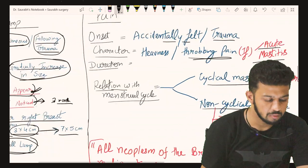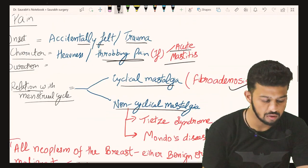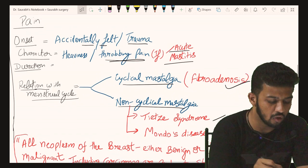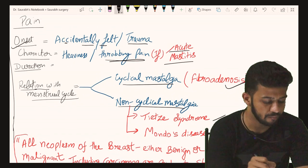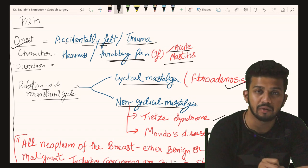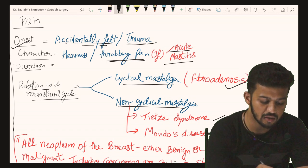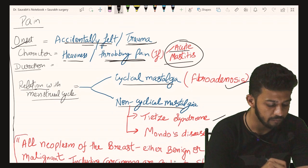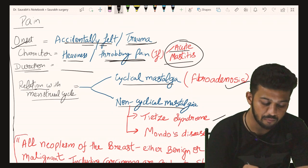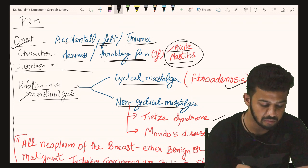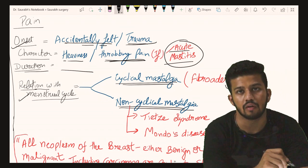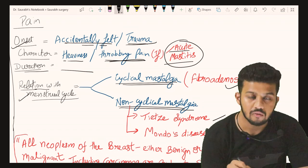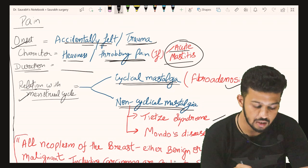Regarding pain: the onset is accidentally felt or following trauma. The character can be heaviness or lumpiness in the breast; if there is throbbing pain it can be acute mastitis. The relation with the menstrual cycle distinguishes cyclical mastalgia from non-cyclical mastalgia, which helps in making the differential diagnosis.